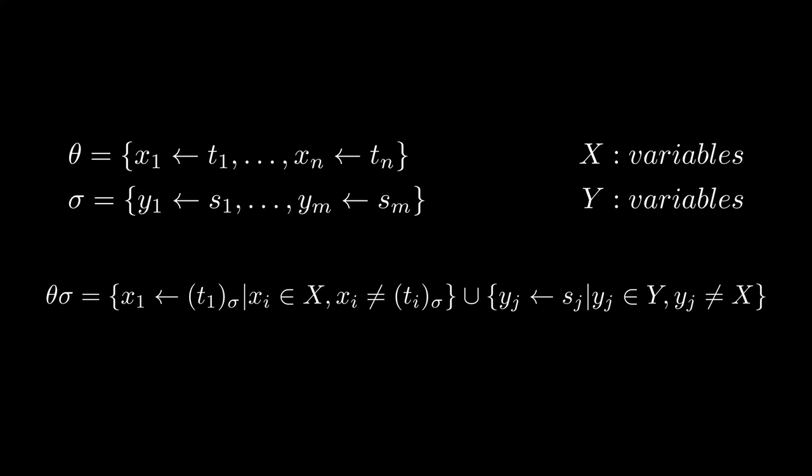In natural language, we can see that the composition theta-sigma is formed by applying the substitution sigma to the terms of theta and adding any pairs from sigma whose variables do not appear in theta.